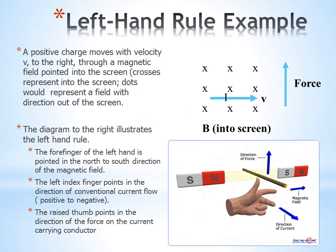Left-hand rule. A positive charge moves with velocity V to the right through a magnetic field pointed into the screen. Crosses represent into the screen. Dots would represent the field with direction out of the screen.